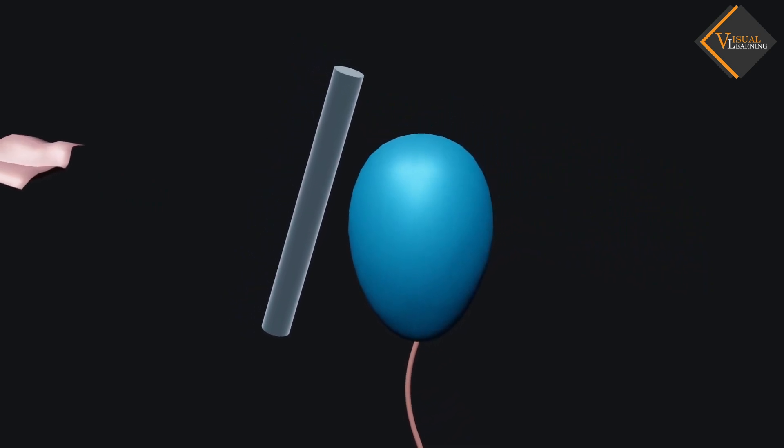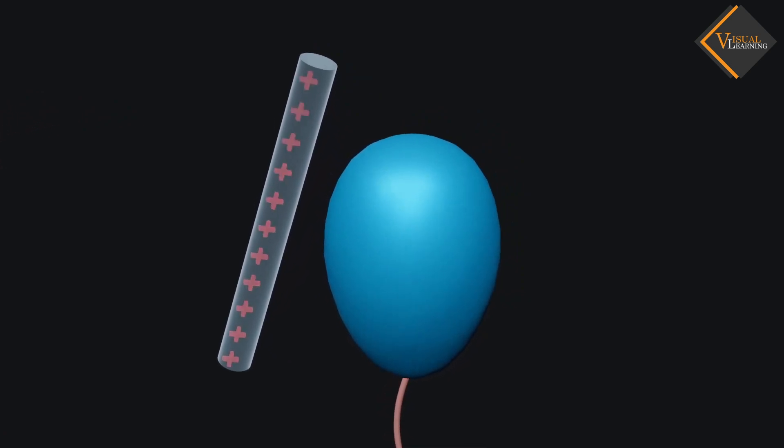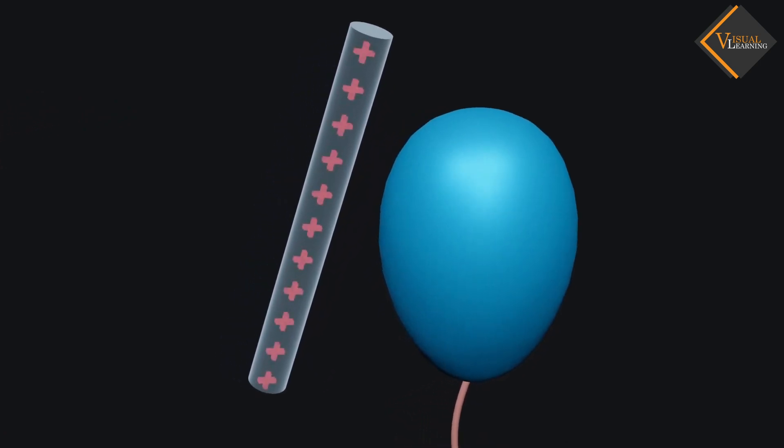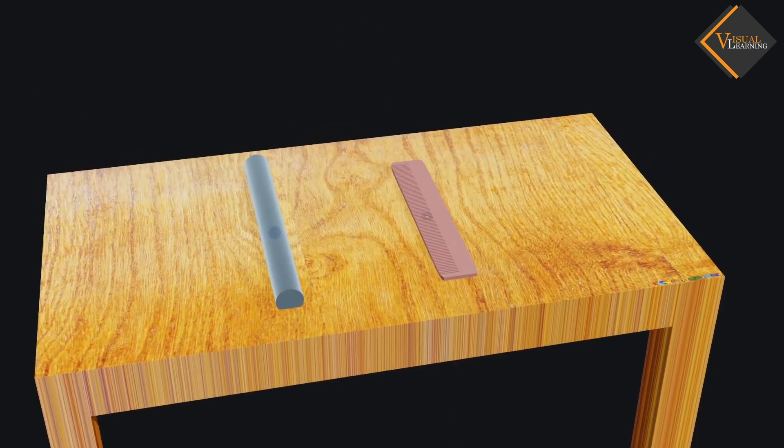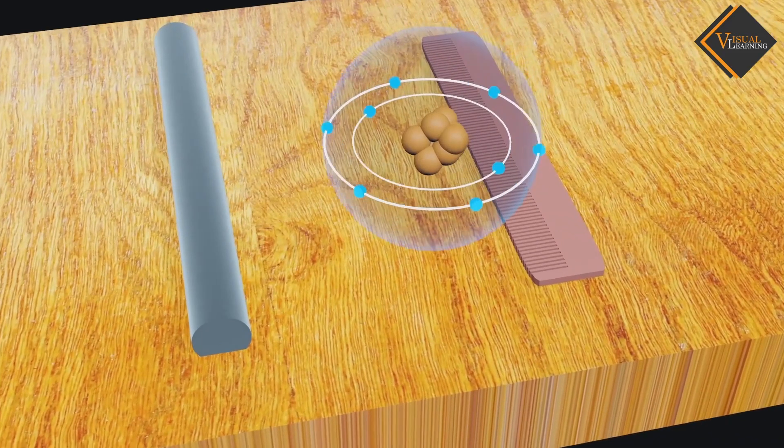From these activities, can we conclude that on rubbing two objects together, they become electrically charged. This has happened because atom consists charged particles within it.